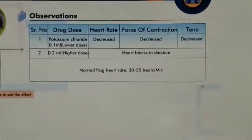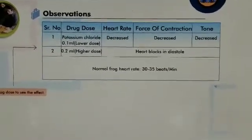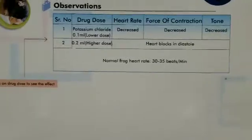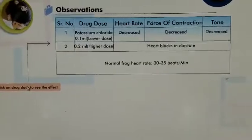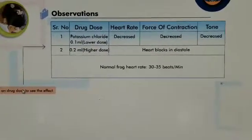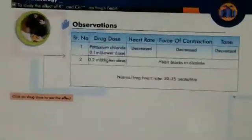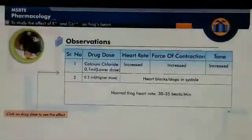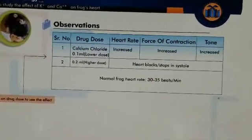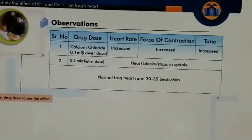Looking at the observation table: Potassium chloride at 0.1 ml (lower dose) — heart rate is decreased, force of contraction is decreased, and tone is also decreased. At higher dose, the heart stops during diastole. For calcium chloride at lower dose — force of contraction and tone are increased. At higher dose, the heart stops during systole.